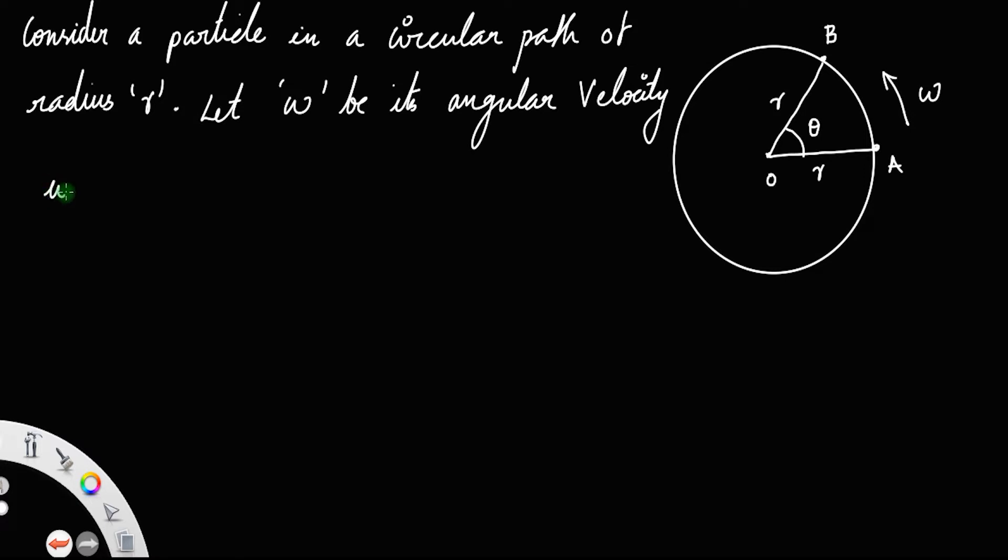We have the straight line distance AB equal to Δs, which represents the displacement between points A and B.